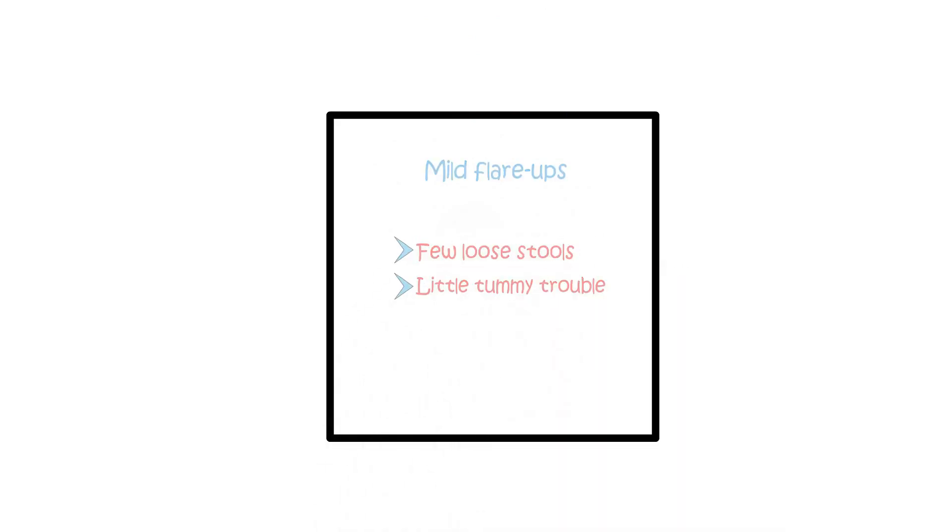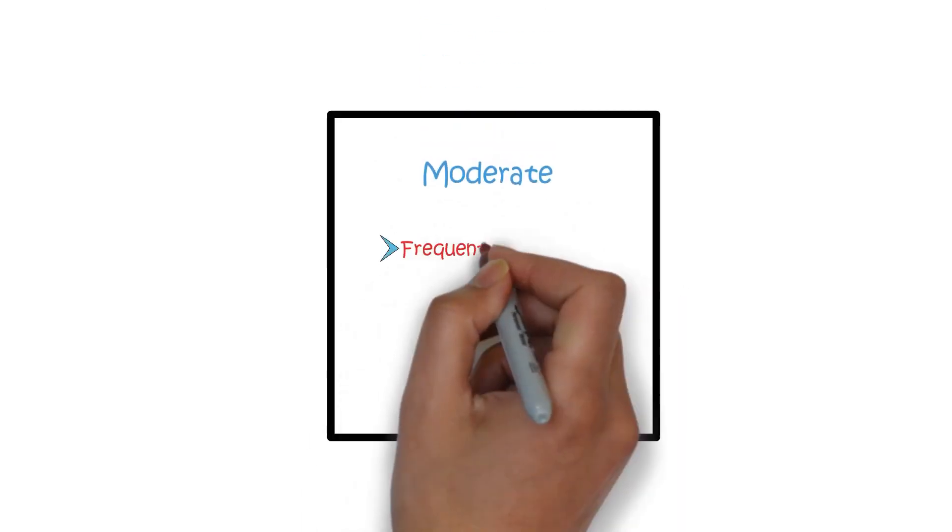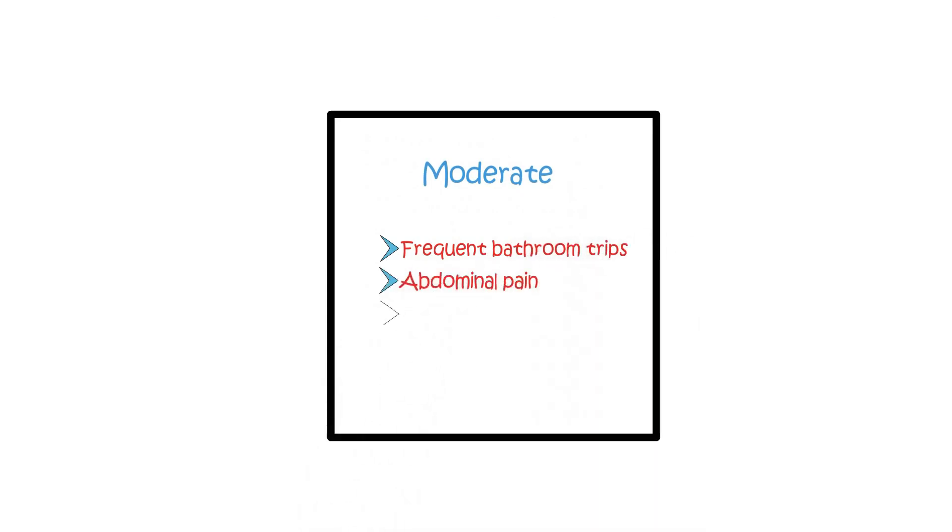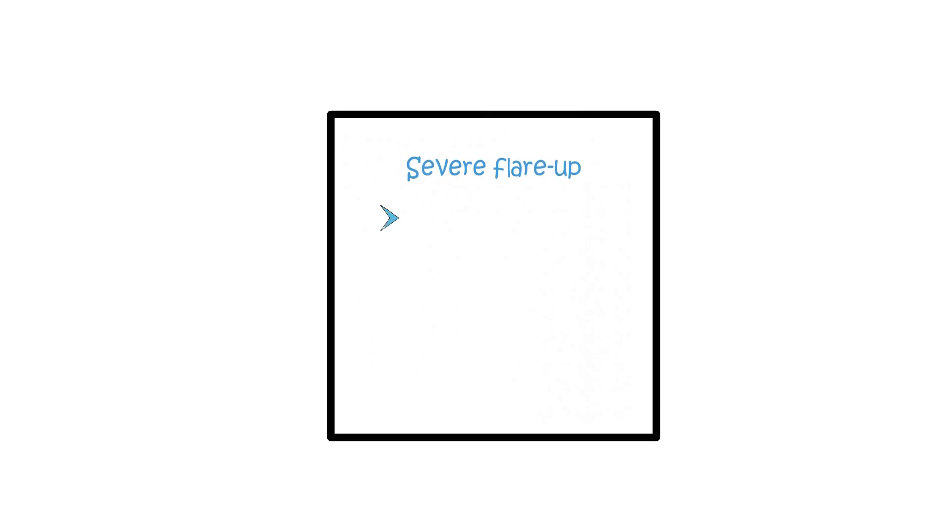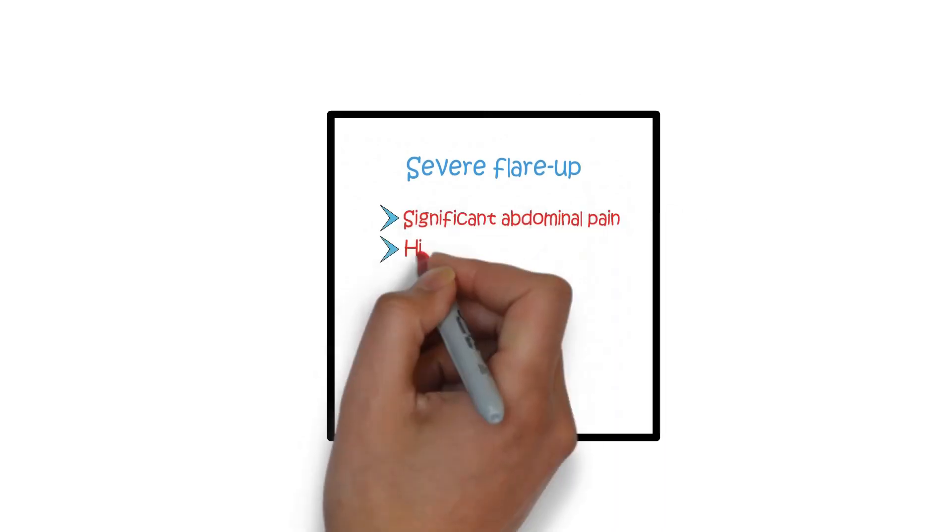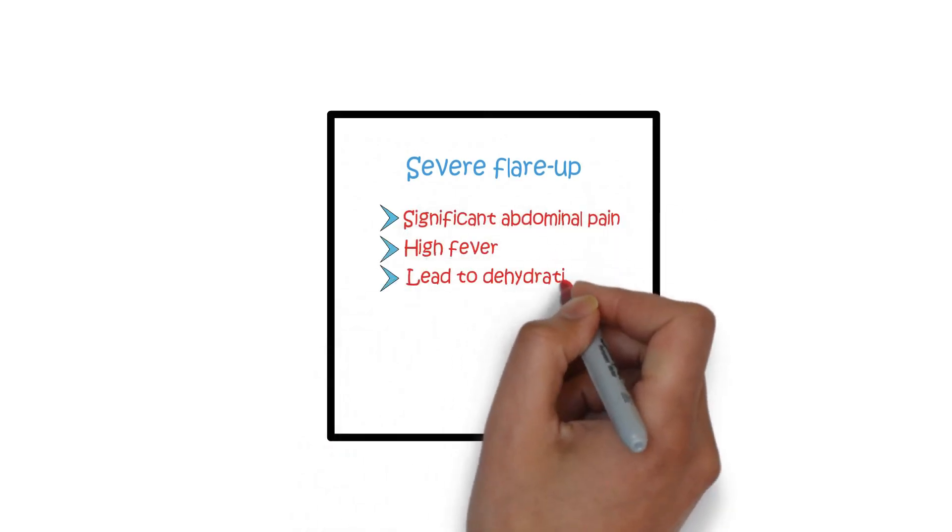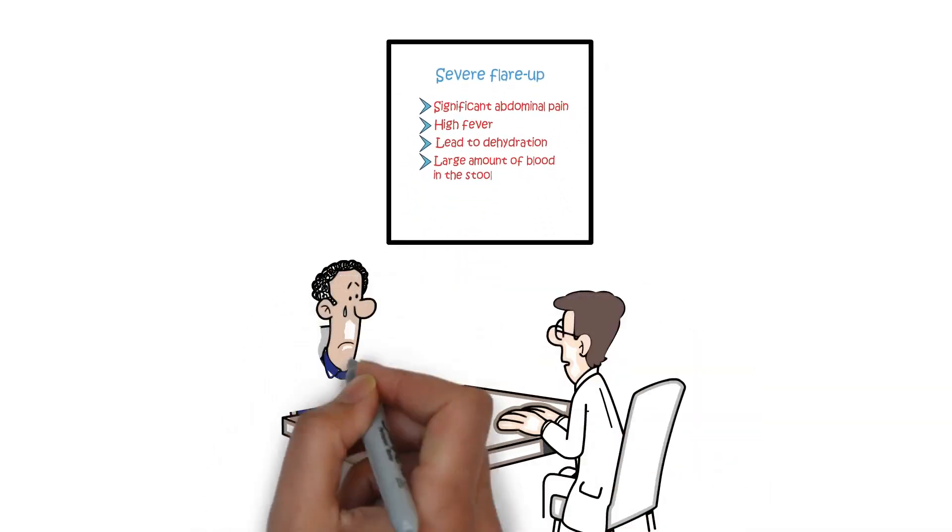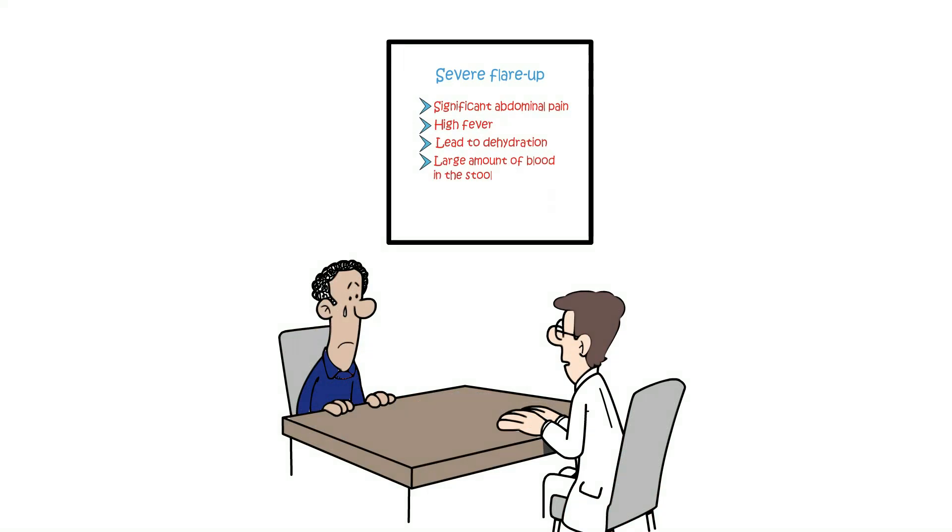The first flare-up is usually the worst. Mild flare-ups may cause just a few loose stools and a little tummy trouble, while moderate ones can bring more frequent bathroom trips, abdominal pain, and fever. Severe flare-ups, on the other hand, can cause significant abdominal pain, a high fever, and even lead to dehydration and a large amount of blood in the stool. It is always important to seek medical advice if you think you are having a flare-up.